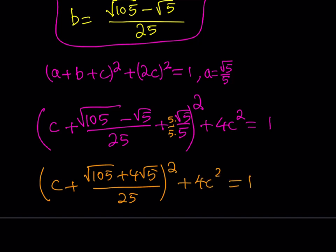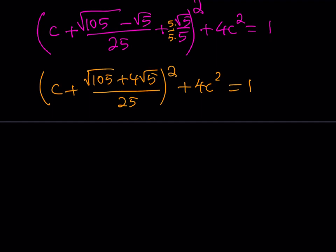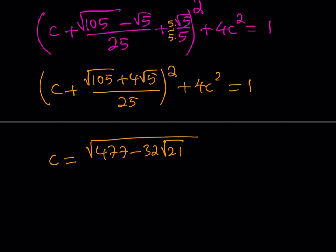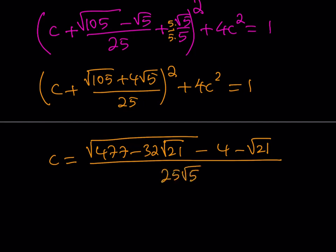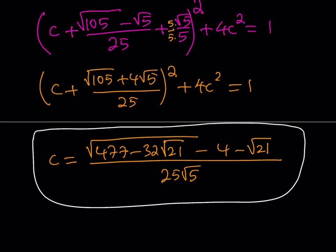This is our quadratic equation to solve for C. To keep a long story short and avoid making the video too long, the C value is: the square root of (477 minus 32 times the square root of 21), all square rooted, minus (4 minus the square root of 21), all over 25 root 5. You can rationalize the denominator by multiplying by root 5 if you like, but that's the radius of the smallest semicircle.